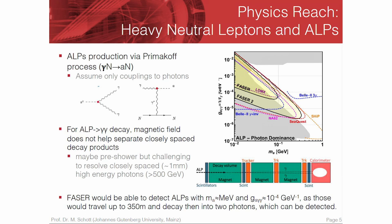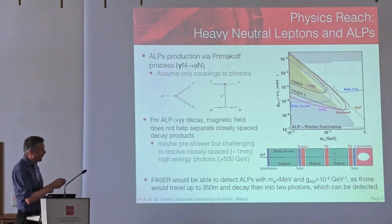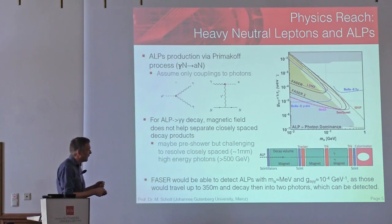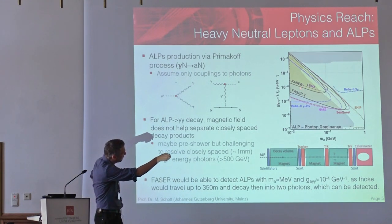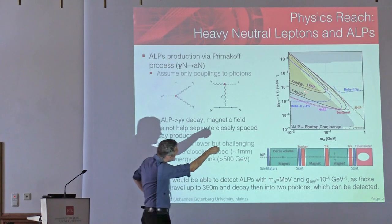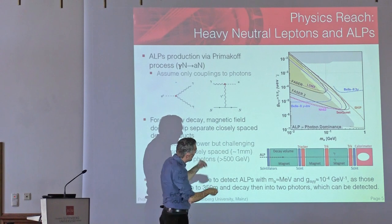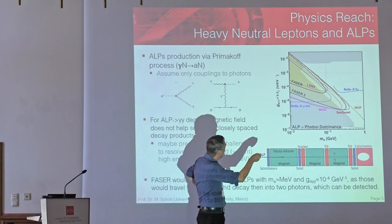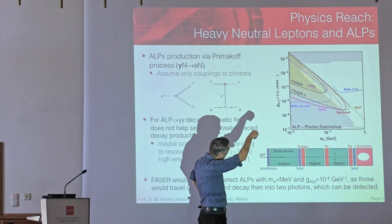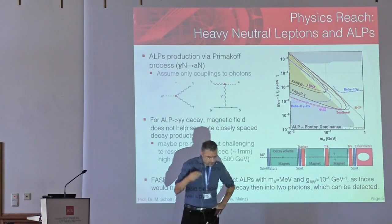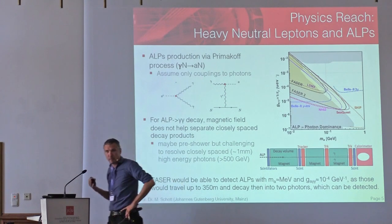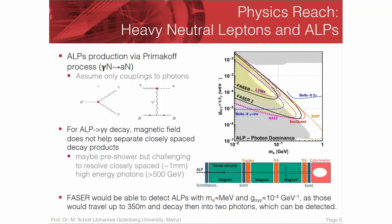Now, why I think these axion-like particles are extremely interesting: if you look at the exclusion plot, you see the new FASER limit which you will get after Run 3 of the LHC. And interestingly, in this region there are models which could explain the G minus 2 of the muon. That's actually why I think it's rather interesting to have a look in this region.